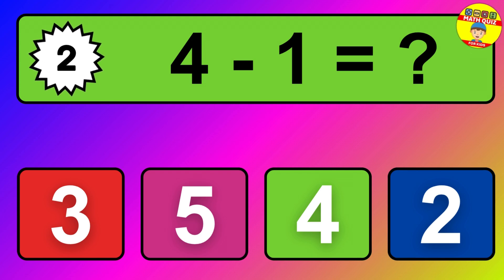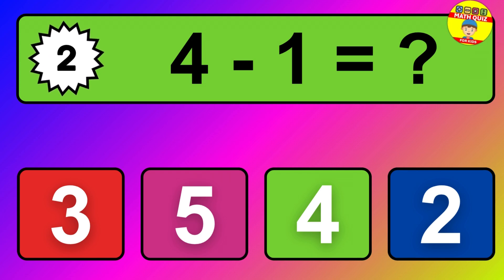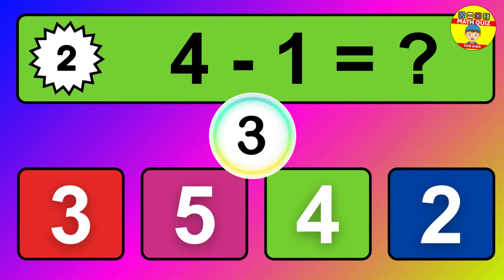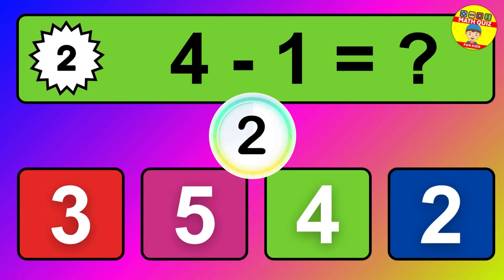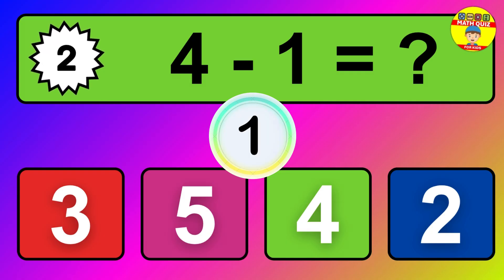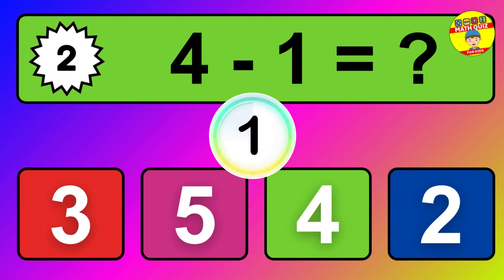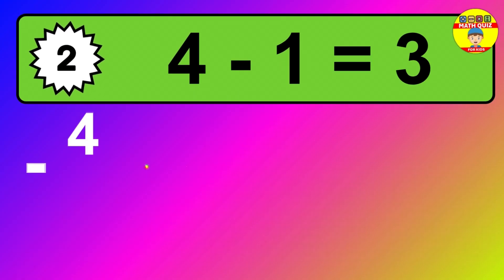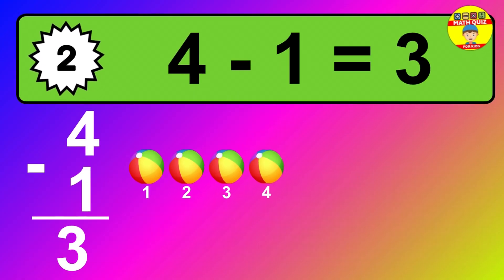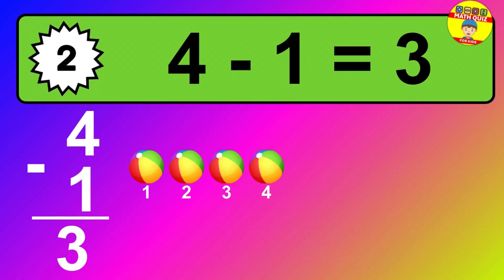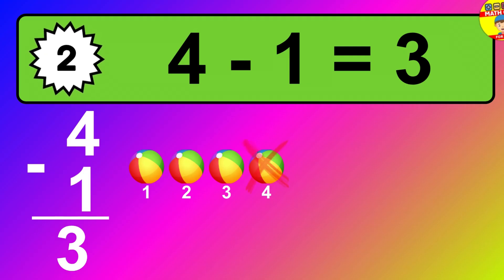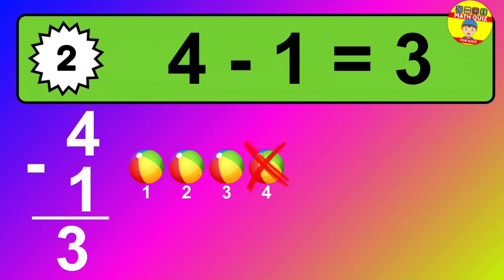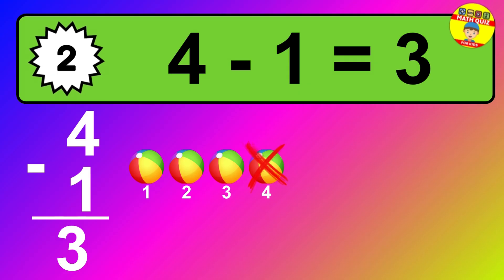Question two: four minus one equals what? So the answer is four minus one is three. Let's count it: one, two, three.